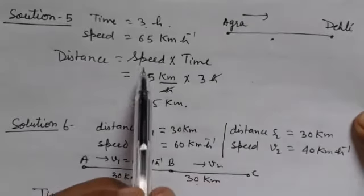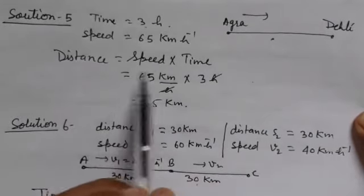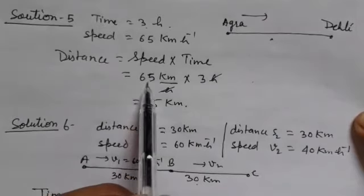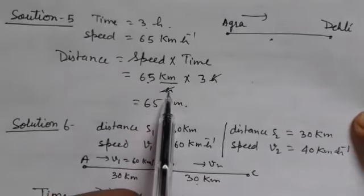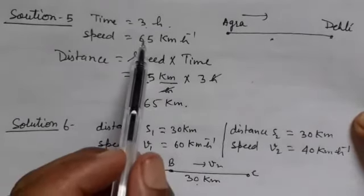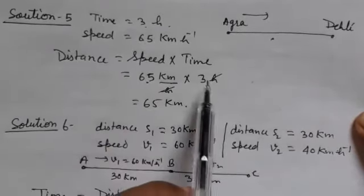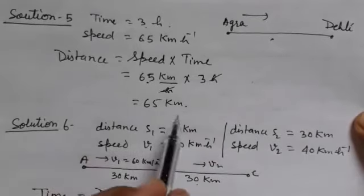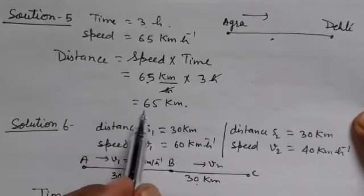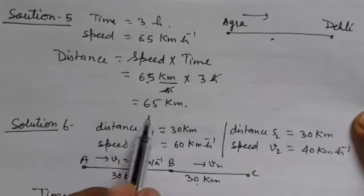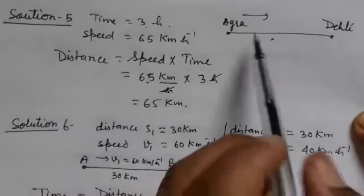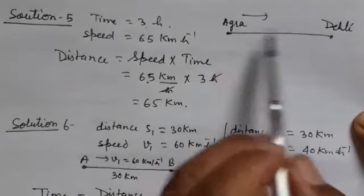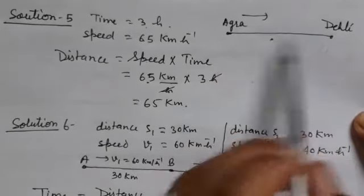Distance is equal to speed 65 km per hour multiplied by time 3 hours. The hours cancel, giving the distance between Agra and Delhi as 195 km.